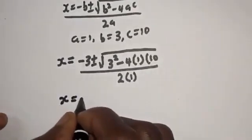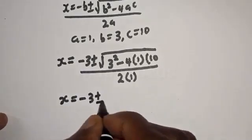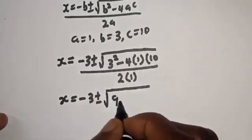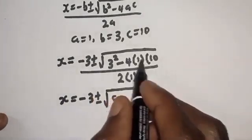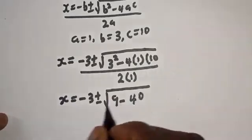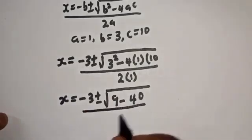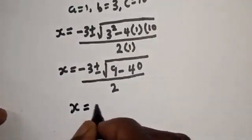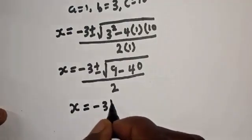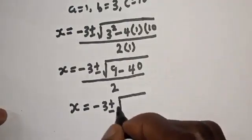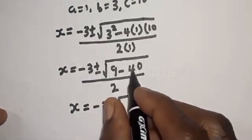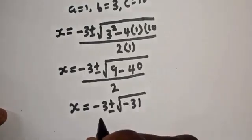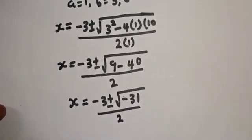Computing: s equals minus 3 plus or minus square root of 9 minus 4 times 1 times 10, which is 40, over 2. So s equals minus 3 plus or minus square root of 9 minus 40, which gives minus 31, over 2.